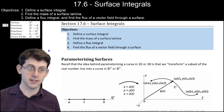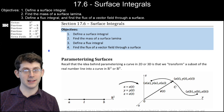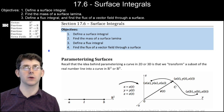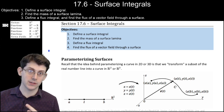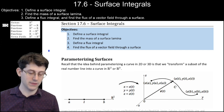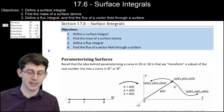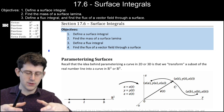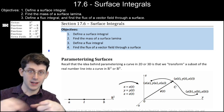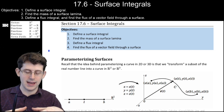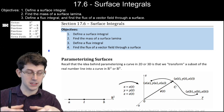This is section 17.6, surface integrals. We're coming up on the very end of the class, and the main goals of the whole class are Green's Theorem, Stokes' Theorem, and the Divergence Theorem. We finished Green's Theorem, which basically had two forms: if you are in the plane, you can measure circulation using an integral on the inside of the region, and you can measure flux by doing an integral on the inside of the region.